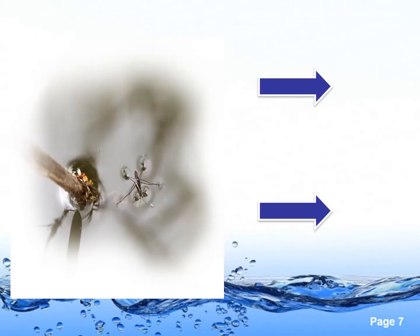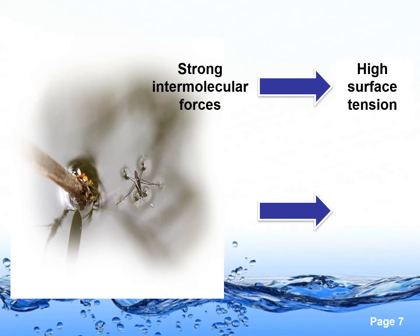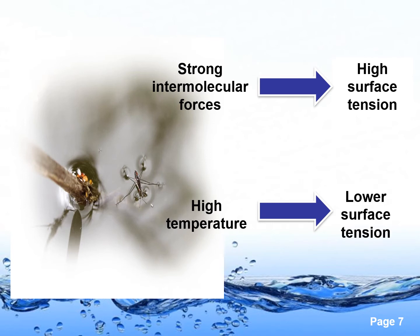Liquid with strong intermolecular forces will have higher surface tension. But as the temperature of the liquid increases — for example in boiling water — the surface tension will be lower, as the molecules gain energy and cause the intermolecular forces to become less effective.